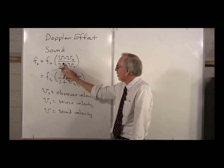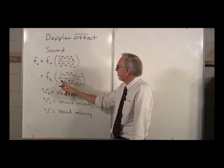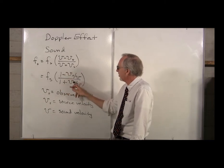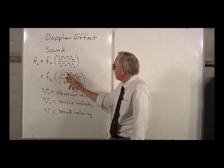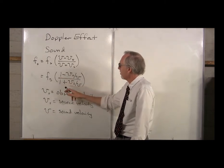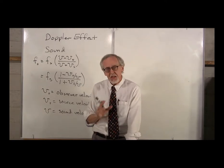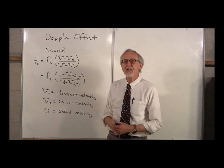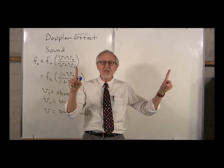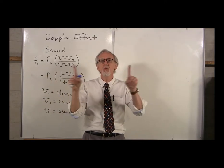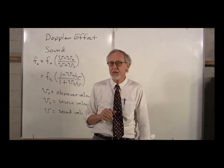Dividing through gives us Fs times (1 minus V0/V) divided by (1 plus Vs/V). With light, it turns out that it doesn't matter if the source is moving or the observer is moving — the only thing that matters is their relative velocity to each other.